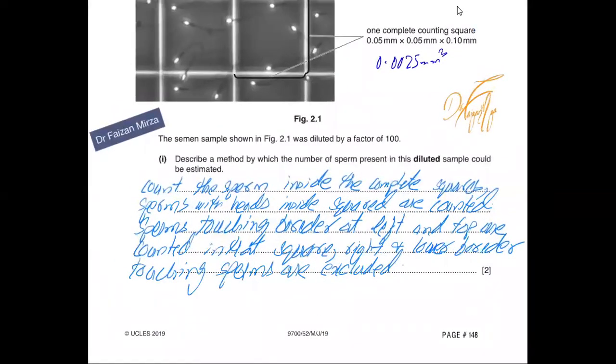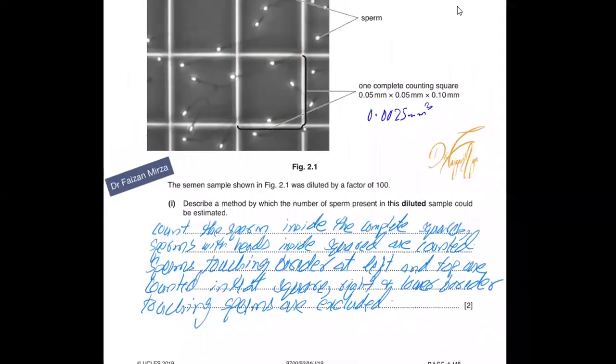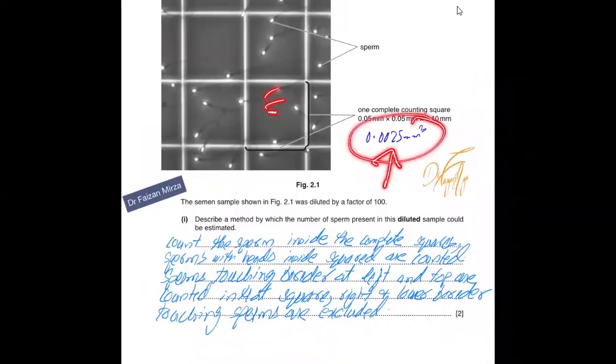Count the sperm inside complete squares - the heads inside the square are counted. Sperm touching the border at right and top are counted in that square. Anyone touching the left and lower border will be excluded. Whatever sperm you've counted are in 0.0025 millimeter cube of liquid sample. The liquid sample was a semen sample already diluted by 100 times.